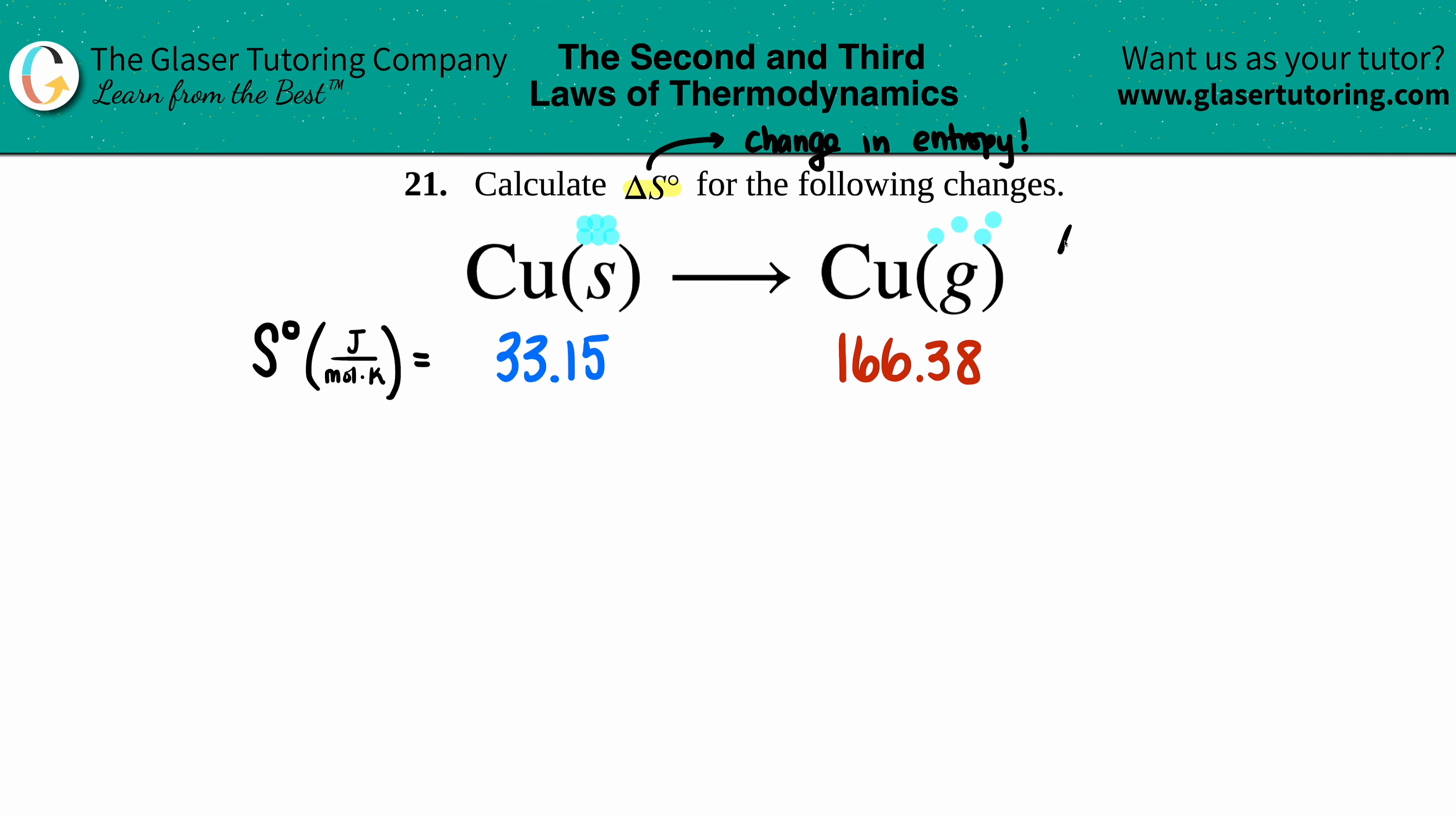So generally we're going to something that is more random, so we already know that our delta S value, that standard delta S value, has to be positive because we're increasing in our randomness, increasing in entropy.